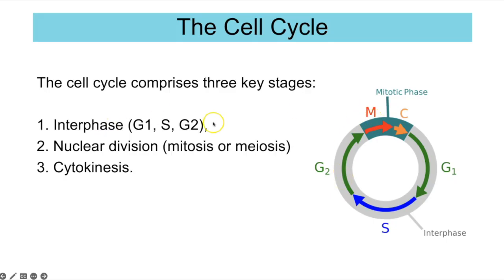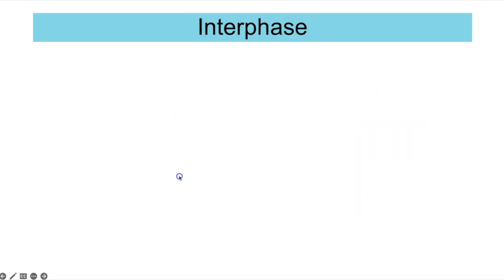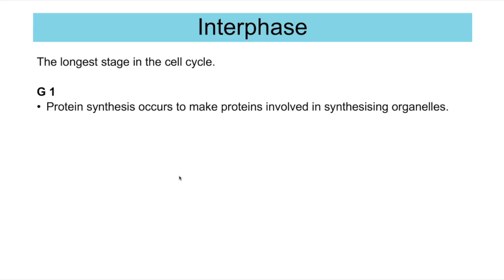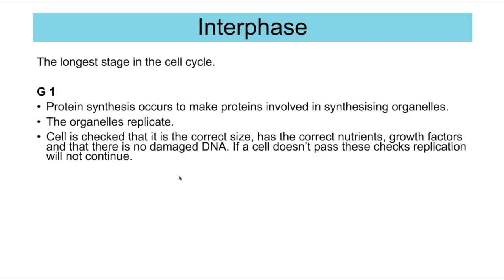After interphase you have M phase — the nuclear division, which can be mitosis or meiosis — and then the last stage is cytokinesis. In G1, protein synthesis occurs to make proteins involved in synthesizing organelles, and then all the organelles replicate. The cell is also checked for correct size, nutrients, growth factors, and DNA damage. If a cell doesn't pass those checks, interphase will not continue. S phase is when DNA replication occurs.